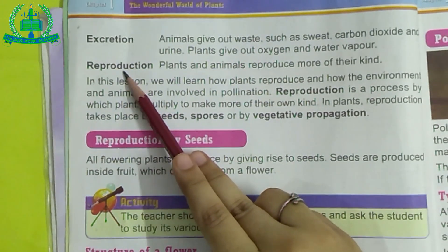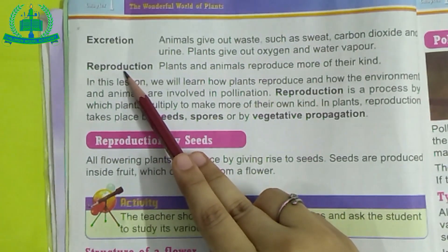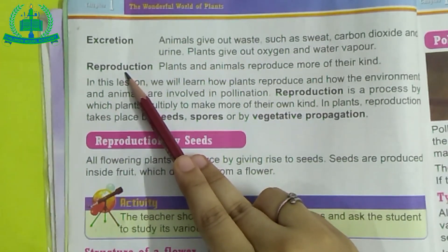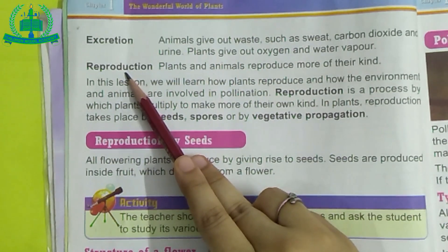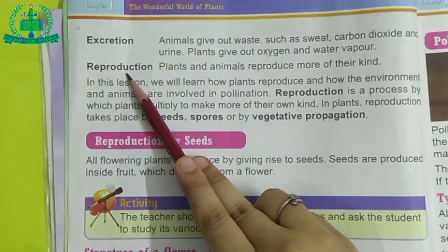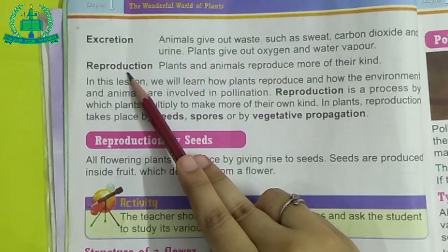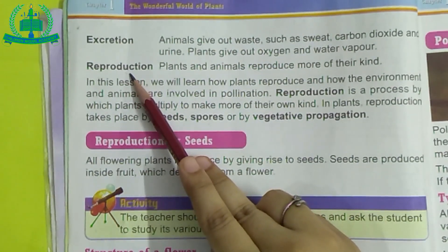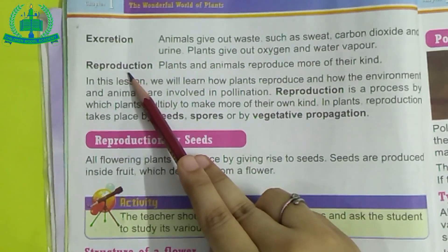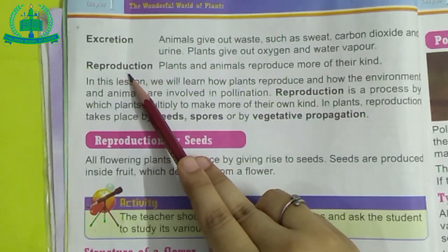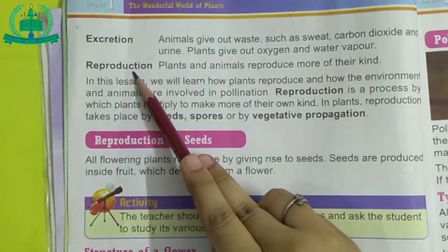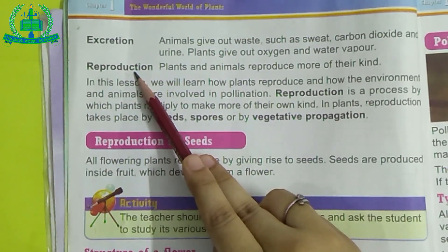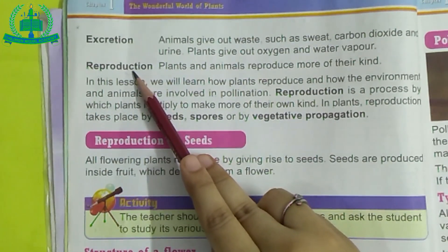The last characteristic is Reproduction. What is reproduction? Reproduction is a process by which plants and animals multiply to make more of their own kind. In plants, reproduction takes place by seeds, spores, or by vegetative propagation.